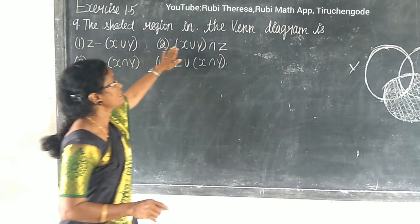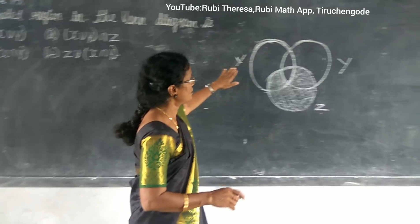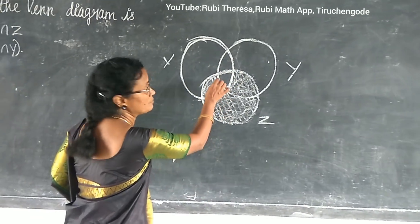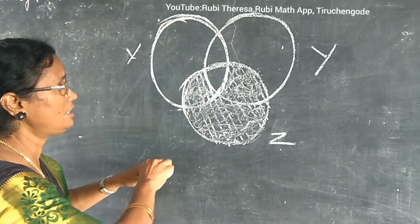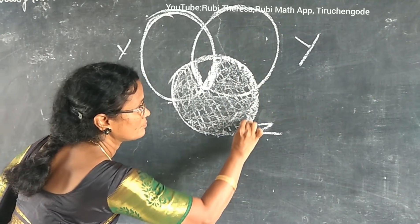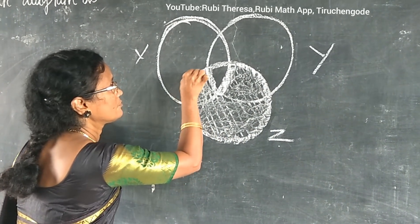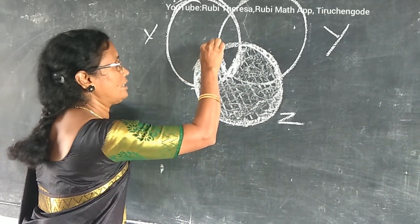The shaded region in the Venn diagram is - you see the shaded portion. Just let me draw the outline. After seeing this outline, do you remember anything?